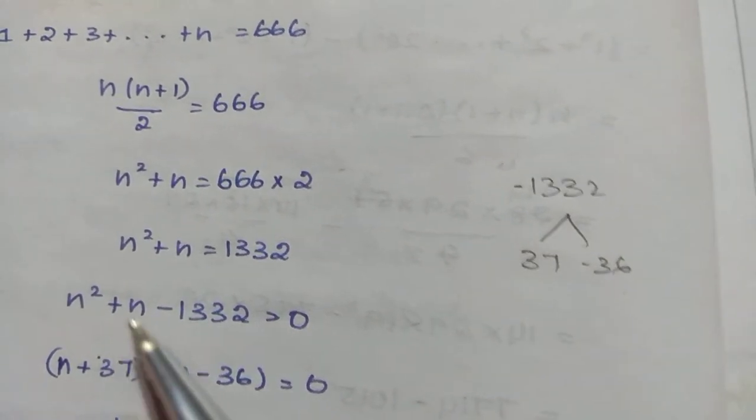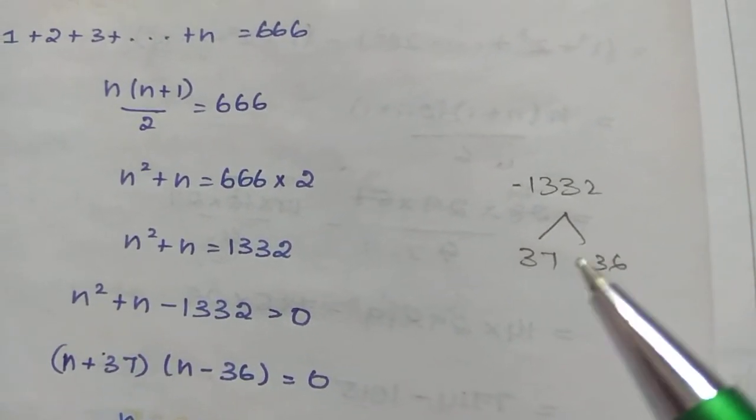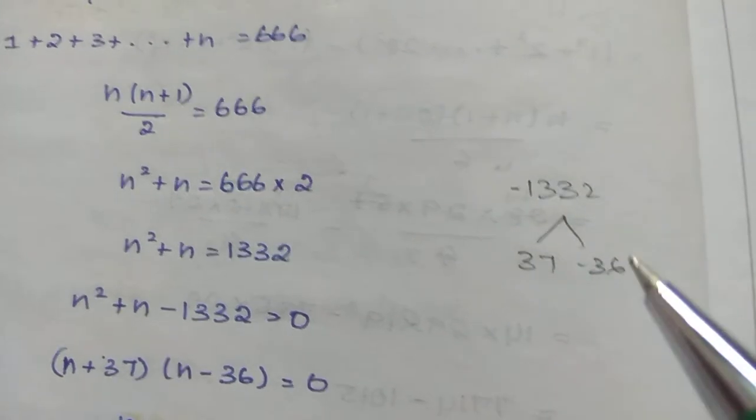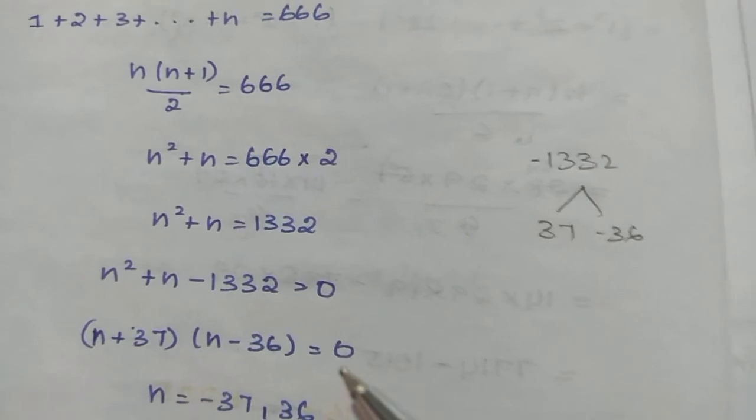Checking: 37 - 36 = 1, which matches our coefficient. So we can write (n + 37)(n - 36) = 0.